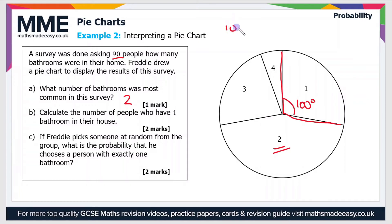So to do that we do 100 divided by 360. So that gives us the fraction of the pie chart which is taken up by this one particular category and then we multiply that by the total number of people which is 90 and that gives us an answer of 25. So there are 25 people who have one bathroom in their house.